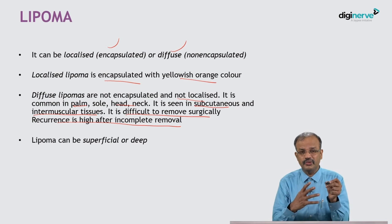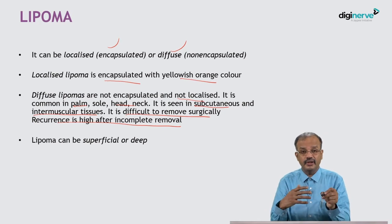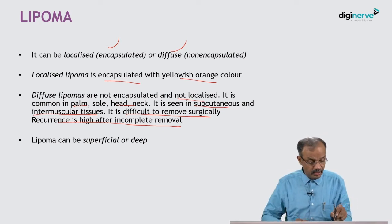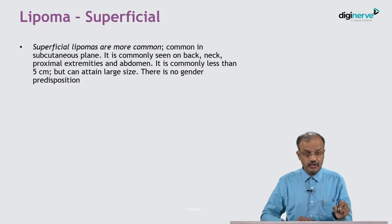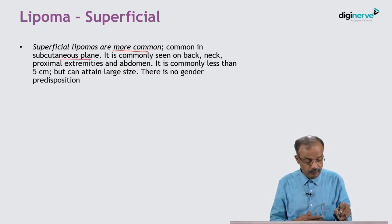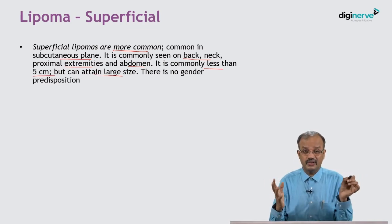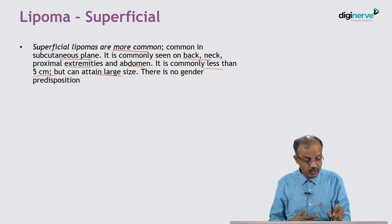Lipoma can also be superficial or deep. Superficial means under the skin, or it may be deep to the muscle, inside the joint, or within the abdominal cavity. Superficial lipomas are more common, visible on the surface, and found in the subcutaneous plane — commonly in the back, neck, extremities, and abdomen. They are usually less than five centimeters but can attain a very large size. There is no gender predisposition; it is equal in males and females.